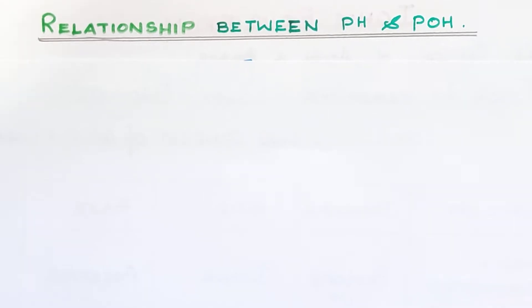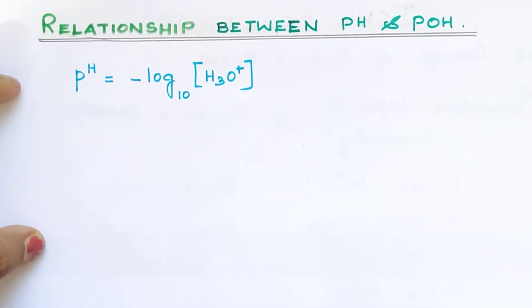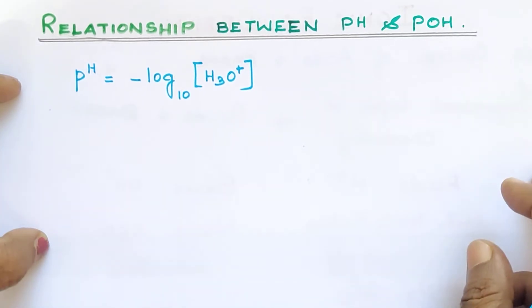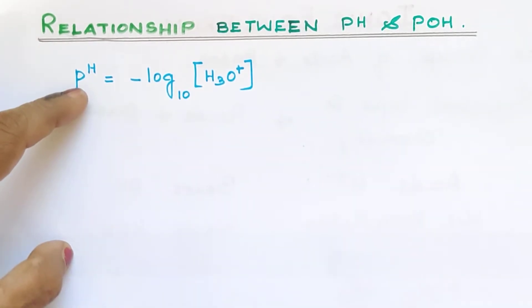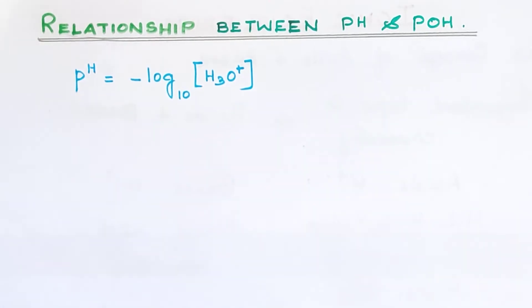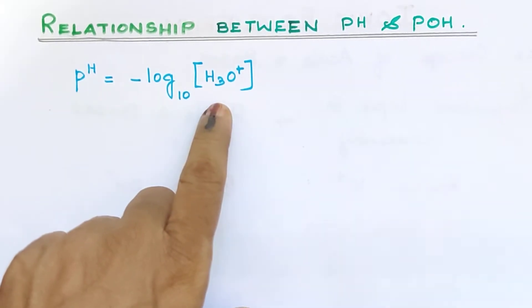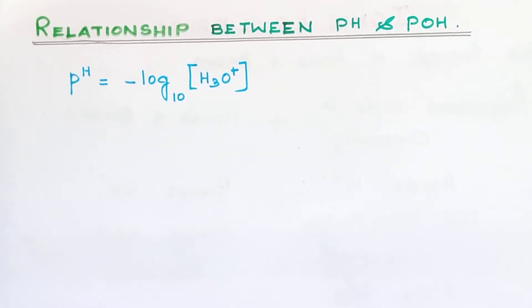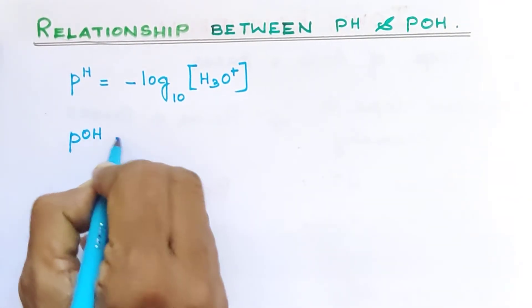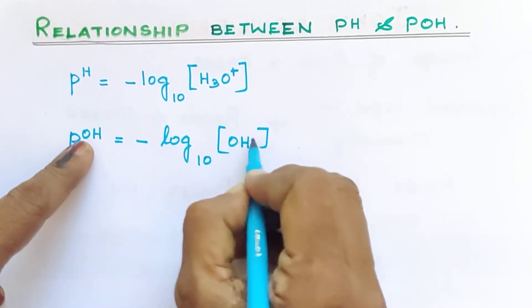First, we know pH as an equation and pOH as an equation. We know pH is equal to minus log base 10 of H3O⁺ concentration. This equation is very important — it is worth 2 marks or 3 marks. Similarly, pOH is equal to minus log base 10 of OH⁻ concentration.